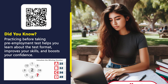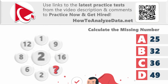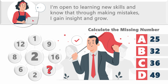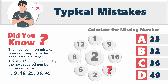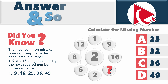Keep practicing and you will get there. Online training for everyone is here to support you. The most important step toward your success is adopting the only winning mentality: not being afraid of trying, experimenting, and making mistakes. Tell yourself: 'I'm open to learning new skills and know that through making mistakes I gain insight and grow.' Speaking of mistakes — the most common mistake people make with this question is recognizing the pattern of squares in numbers 1, 9, and 16, and just choosing the next squared number, which would be 25. But 25 is not the right answer.